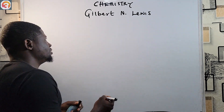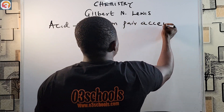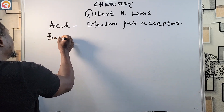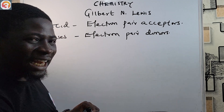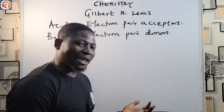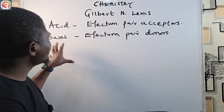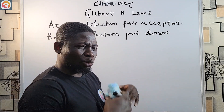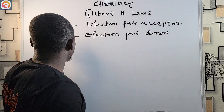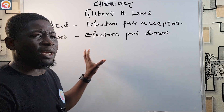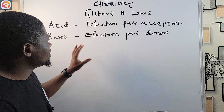So today we are seeing the definition of acids, bases and salts by Gilbert N. Lewis. Acids are electron pair acceptors, while bases on the other hand are electron pair donors. This is the fundamental definition for this episode, so make sure you know this first before we start talking about anything else — it is very easy and very important.